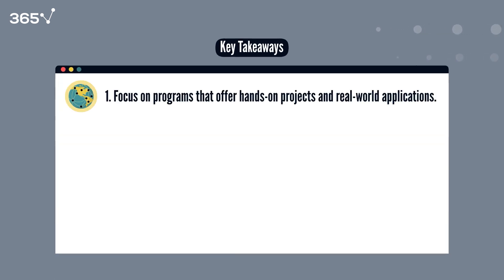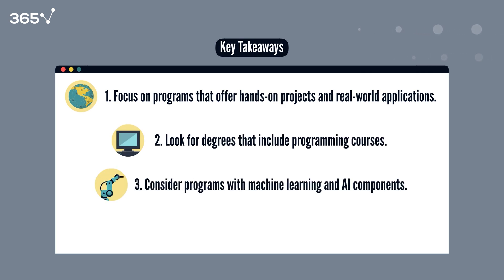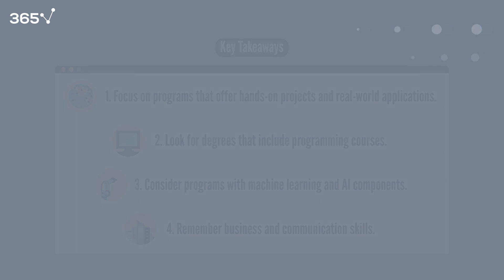Now, let's round up the key takeaways. One, focus on programs that offer hands-on projects and real-world applications. Two, look for degrees that include programming courses. Three, consider programs with machine learning and AI components. Four, remember business and communication skills.